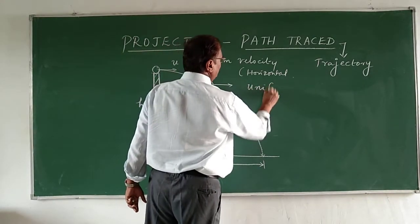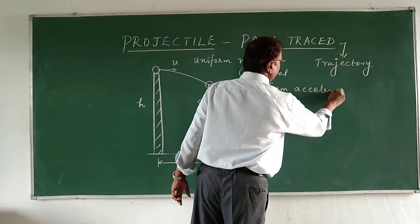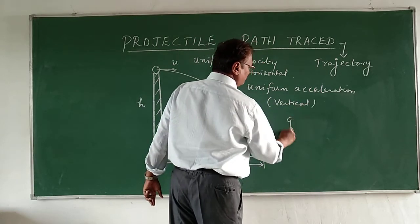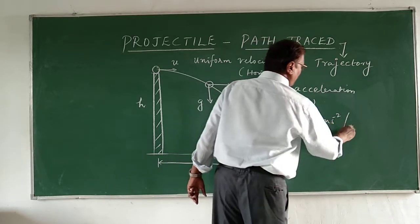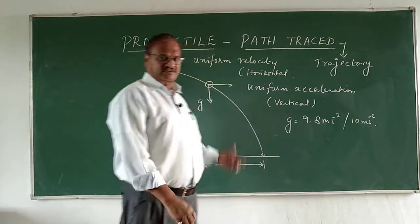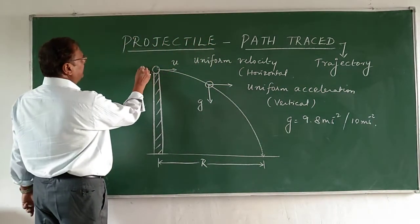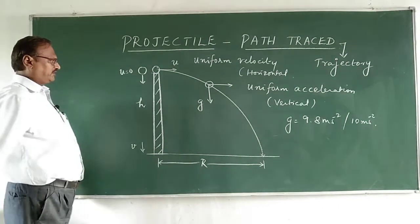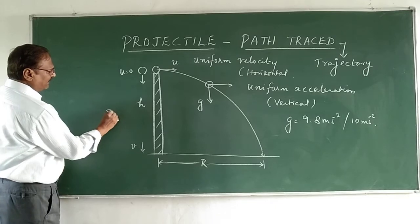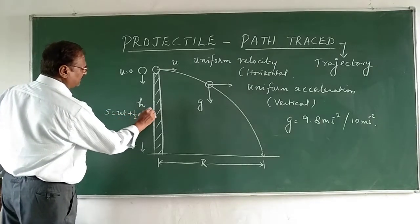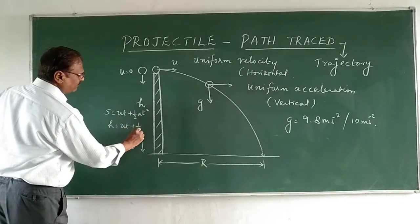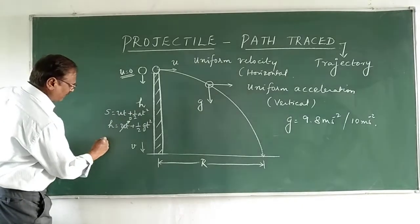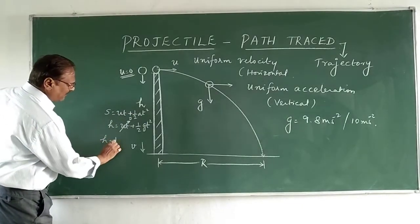The second force is gravity, which gives uniform acceleration. The acceleration due to gravity is constant, and at a given place we take g equal to 9.8 m/s² or 10 m/s² as per necessity. The body at this point has zero initial vertical velocity, and using the formula s = ut + ½at², we get h = ½gt², since the initial vertical velocity is zero.